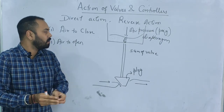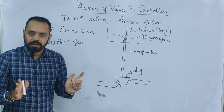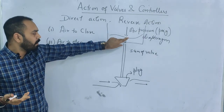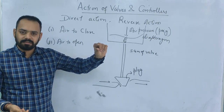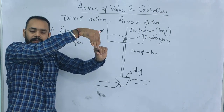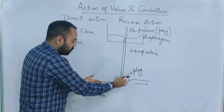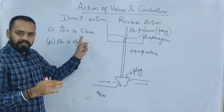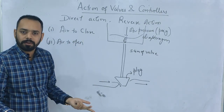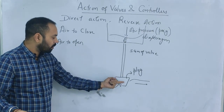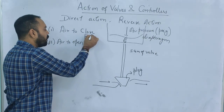Now think: suppose the controller fails and is not able to send a signal to the valve — no air signal, no psig signal. This condition is called the failure condition. What happens? The spring, which was compressed before, restores to its original position — it is the tendency of a spring. When the signal is lost, the spring regains its original position, the stem shifts upwards, and the flow area is completely open. This is why the air-to-close valve is also called a fail-open valve.